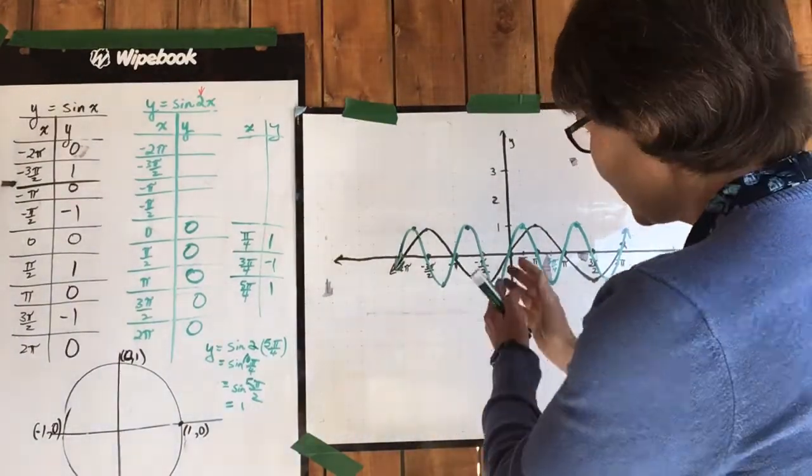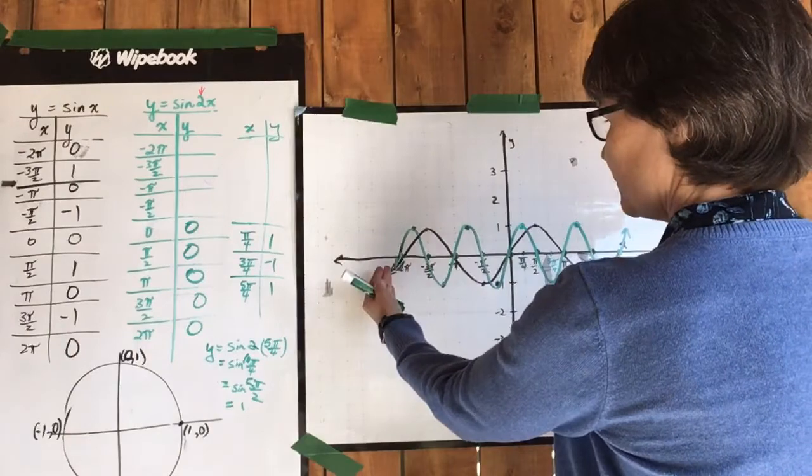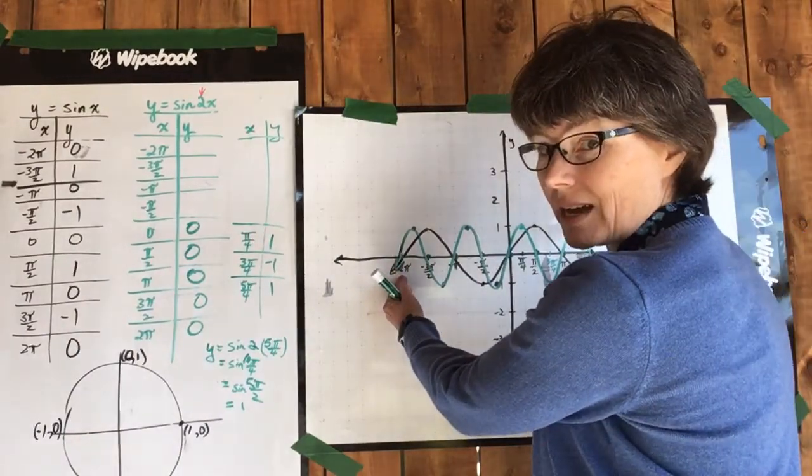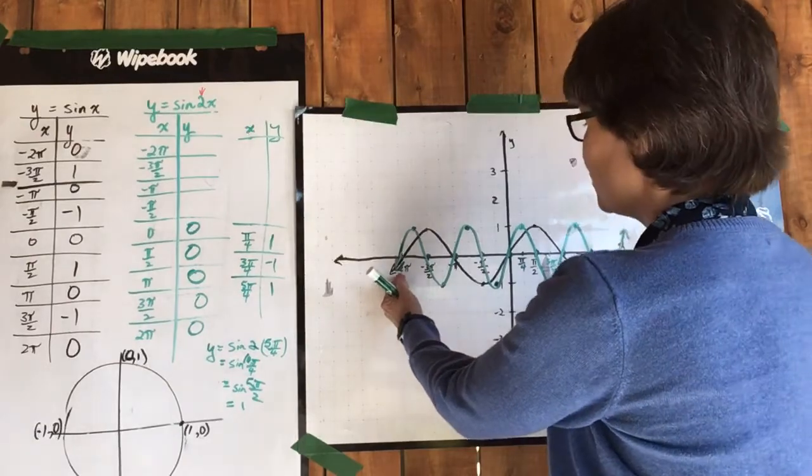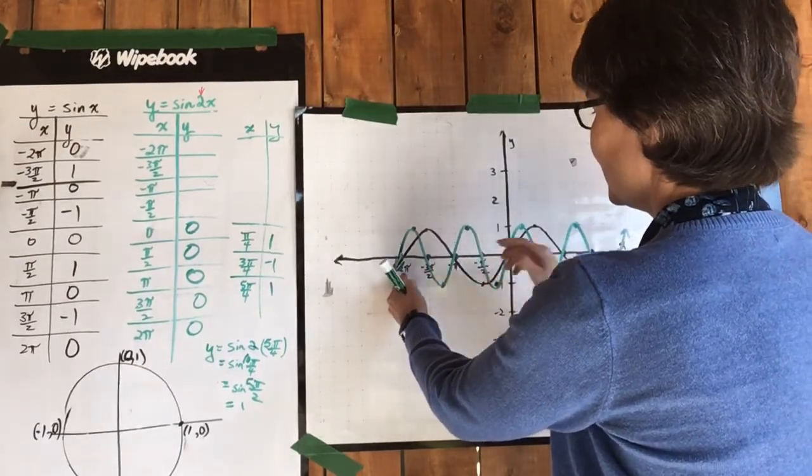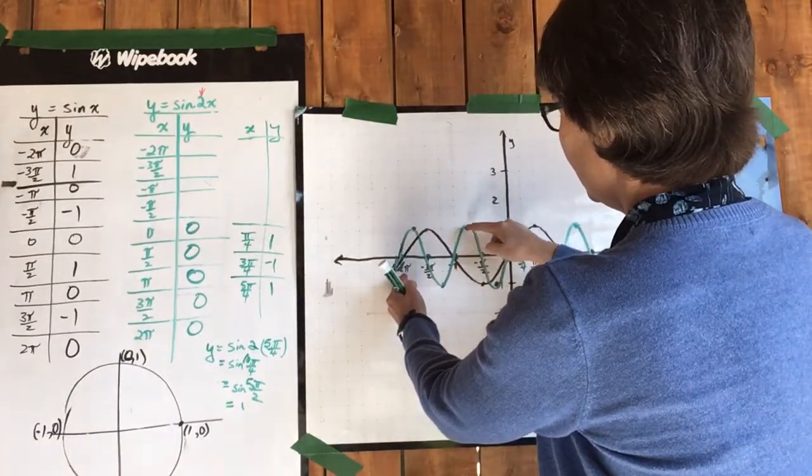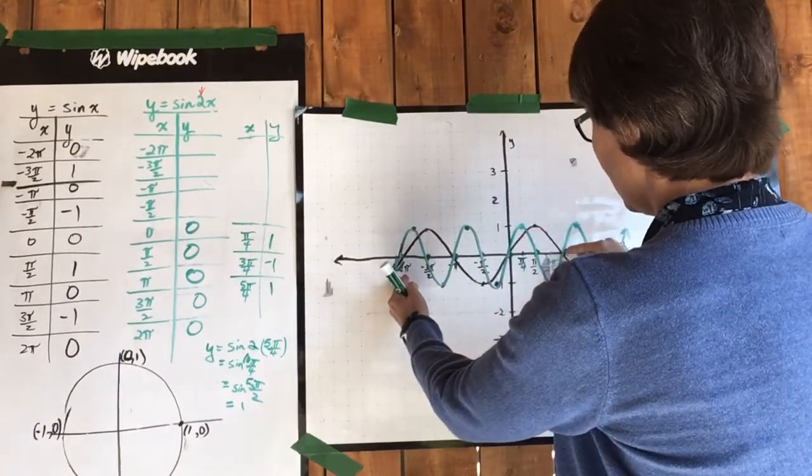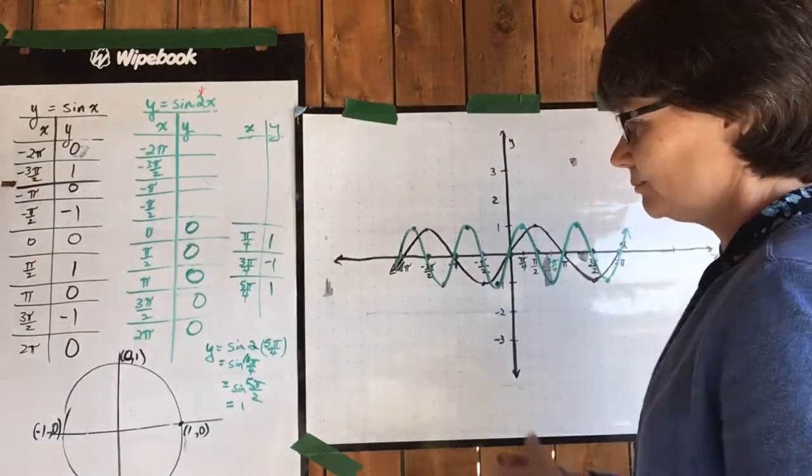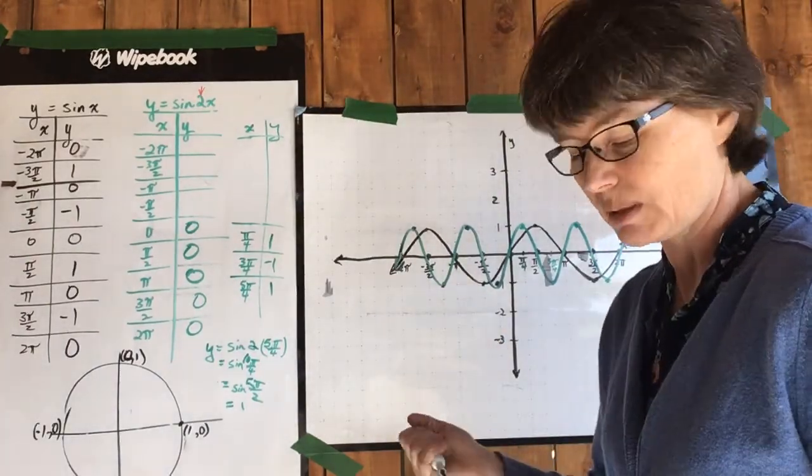So in this same space from negative two pi to positive two pi, where with our black graph y equals sine x we had two periods, one, two, how many periods do we now have? One, two, three, four. So twice as many periods. Twice as many periods in the same space as before.